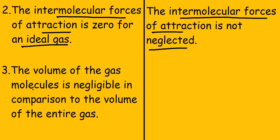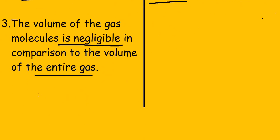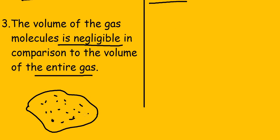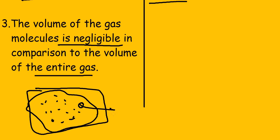The third point: for an ideal gas, the volume of the gas molecule is negligible in comparison to the volume of the entire gas. The entire gas volume is massive compared to the individual gas molecules, so the volume of each molecule is negligible. In other words, molecular size is neglected for an ideal gas.